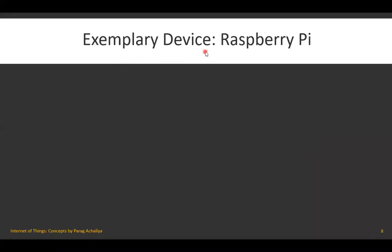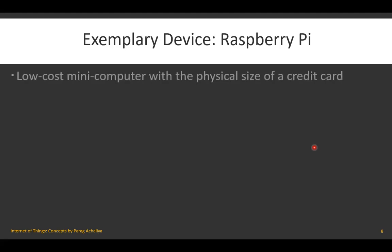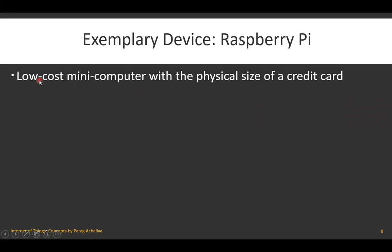Today we will see the Raspberry Pi, an exemplary IoT device that is very popular for developing IoT applications. It is a low-cost mini computer with the physical size of a credit card, available at very low cost.